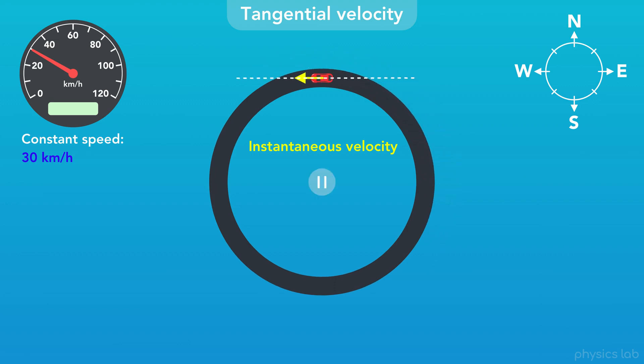If we pause time when the car is here, the car is moving to the left. So the velocity of the car at this time is 30 km per hour west. Here the car's velocity is 30 km per hour south, and here it's 30 km per hour east.